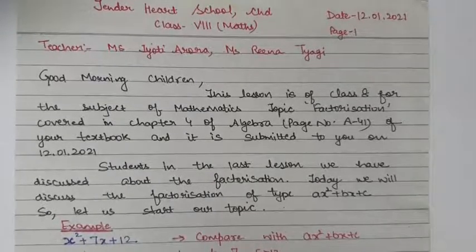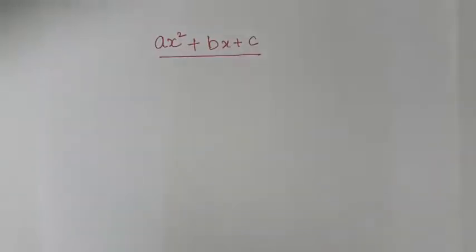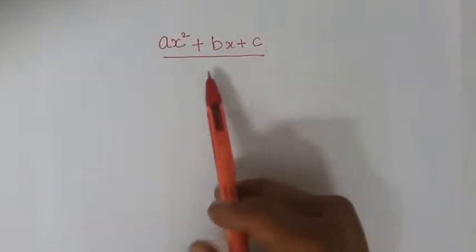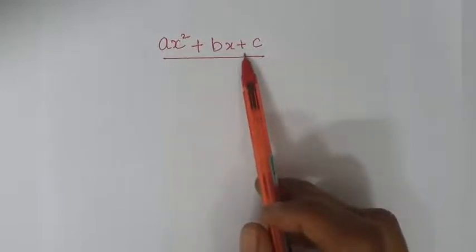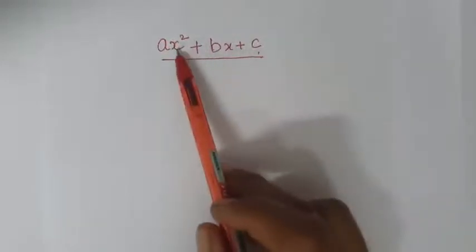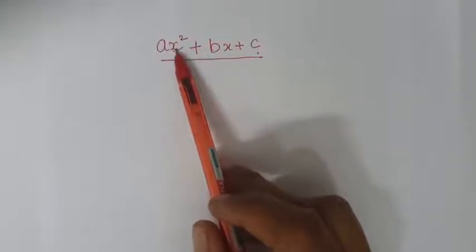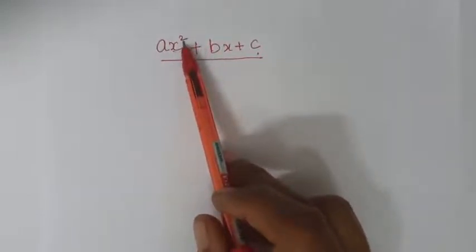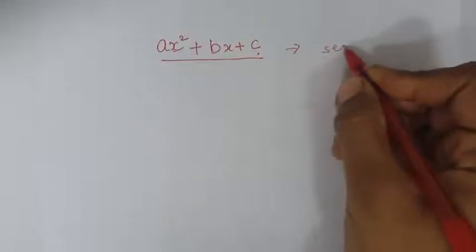Let us start our topic. A Second Degree Equation is of the type Ax² plus Bx plus C. Why is this called Second Degree? Because x is the variable and the highest power of the variable is 2. That is why this is called the Second Degree Polynomial.